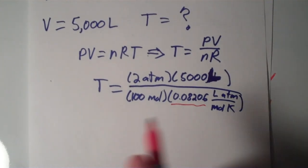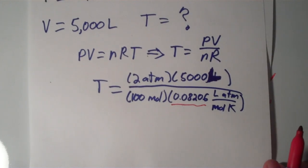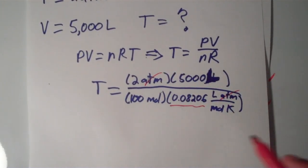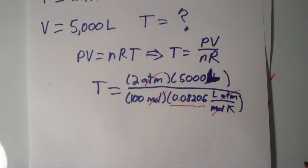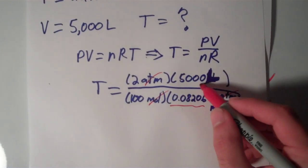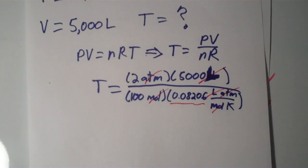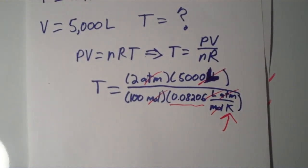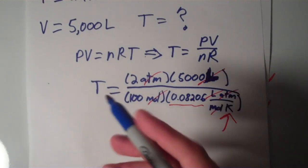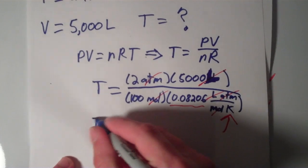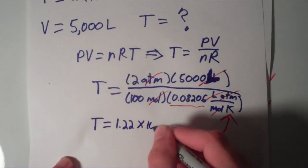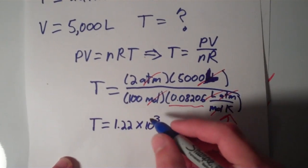So notice if we cancel all of these units out, we will get a unit of temperature. Atmospheres cancels here and here, and then moles cancels here and here, and then liters cancel here and here, and we're left with nothing but kelvins. Okay? So if you crunch these numbers into a calculator, you'll get something along the lines of T is equal to 1.22 times 10 to the third kelvins.